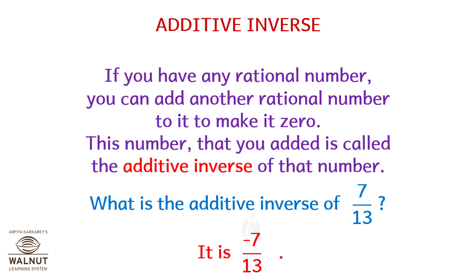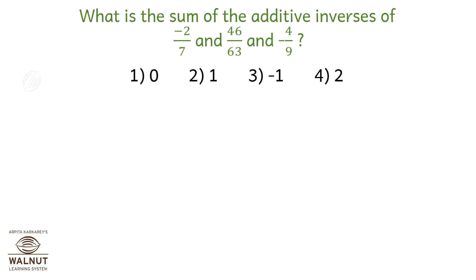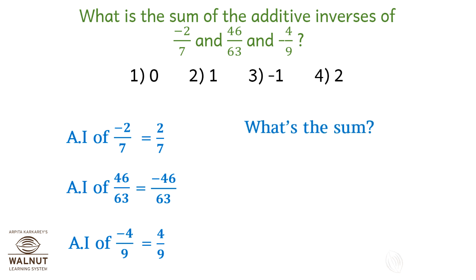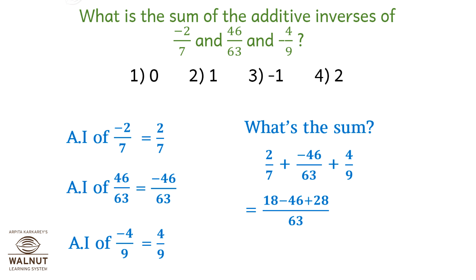Let's see a few examples. What is the sum of the Additive Inverses of minus 2 upon 7, 46 upon 63, and minus 4 upon 9? The Additive Inverse of minus 2 upon 7 is 2 upon 7. The Additive Inverse of 46 by 63 is minus 46 by 63, and the Additive Inverse of minus 4 upon 9 is 4 upon 9. So the sum is 2 upon 7 plus minus 46 upon 63 plus 4 upon 9, which equals 18 minus 46 plus 28 upon 63.